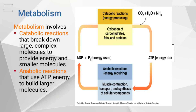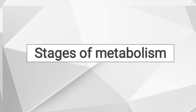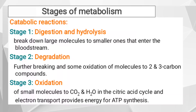There are three stages of catabolic reactions. Stage one is digestion and hydrolysis, the breaking down of large molecules into smaller ones that enter the bloodstream. Stage two is degradation, the further breaking and some oxidation of molecules to two- and three-carbon compounds. Stage three is the oxidation of small molecules to carbon dioxide and water in the citric acid cycle and electron transport, which provides energy for ATP synthesis.